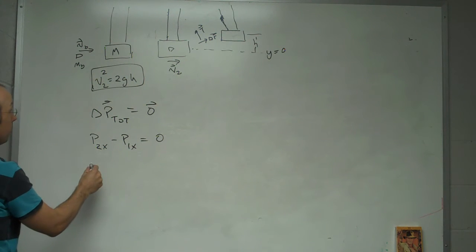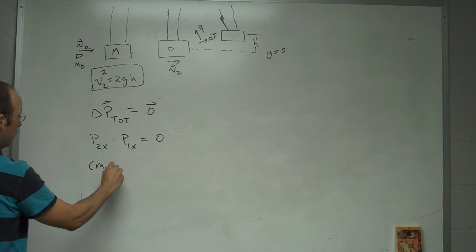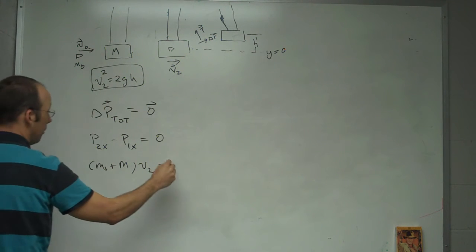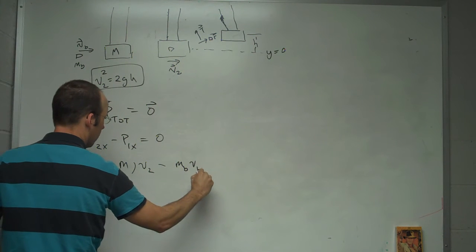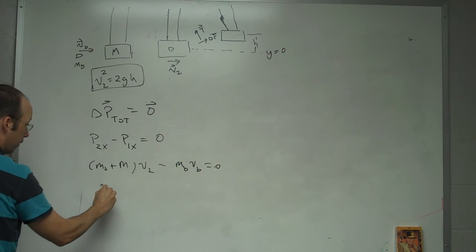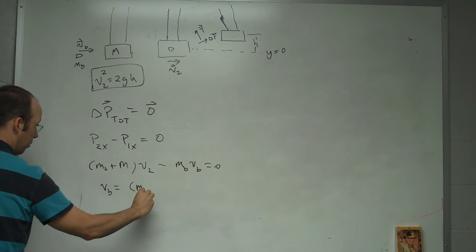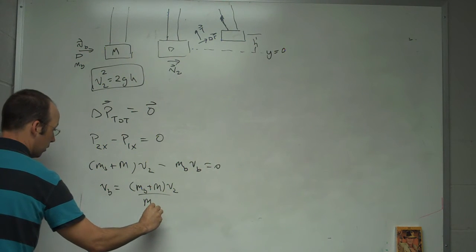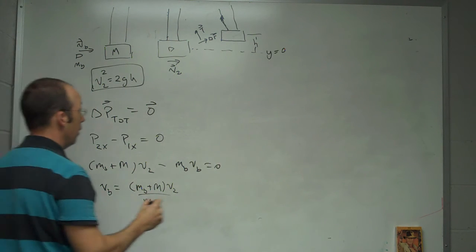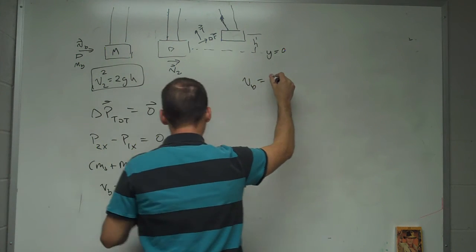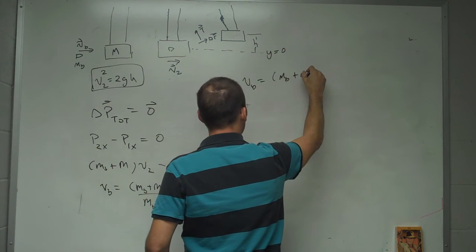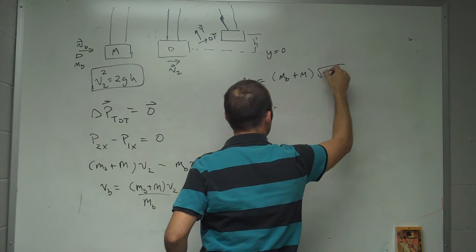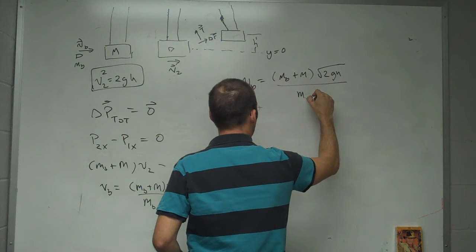So finally, the final momentum is going to be mass of the bullet plus mass of the block times V2, that way, minus the initial momentum, mass of the bullet, velocity of the bullet equals zero. So I can solve for the velocity of the bullet. It's going to be mass of the bullet plus mass of the block V2 over mass of the bullet. And then V2, I know that value right there. So the velocity of the bullet is going to be mass of the bullet plus mass of the block times the square root of 2gh, all that over mass of the bullet.